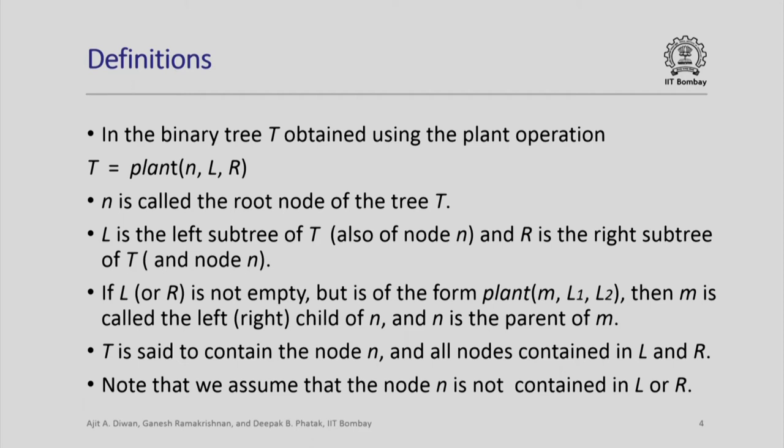There are some terms used in binary trees that we will define. If we have a binary tree t obtained by planting l and r at a node n, then n is called the root node of the tree t, l is called the left subtree of t and of the root node n, and r is the right subtree of t. If l or r is not empty but is itself of the form plant(m, l1, l2), then m is called the left or right child of n, and n is the parent of m.